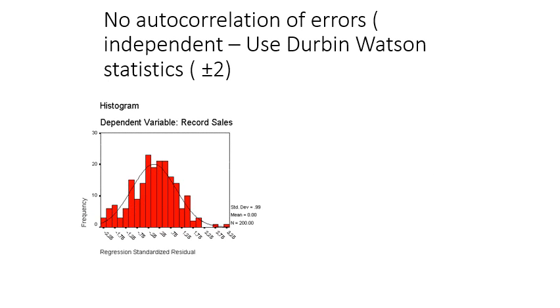Our next assumption that we need to look at is no autocorrelation of errors. That means the errors are independent of each other. We check this using the Durbin-Watson statistics, making sure that it's within plus minus two.